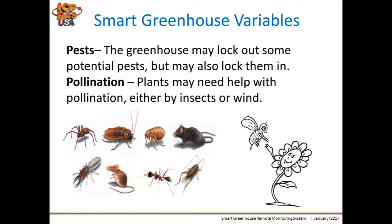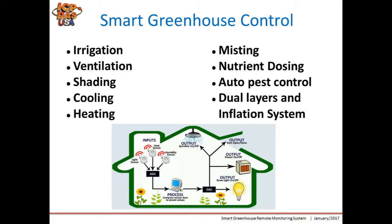There are other greenhouse variables such as pests and pollination. The greenhouse may lock out some potential pests but may also lock them in. Insect-pollinated plants will need bees for pollination, rain-pollinated plants will need rain, and wind-pollinated plants also benefit from physical movement by rain or insects.